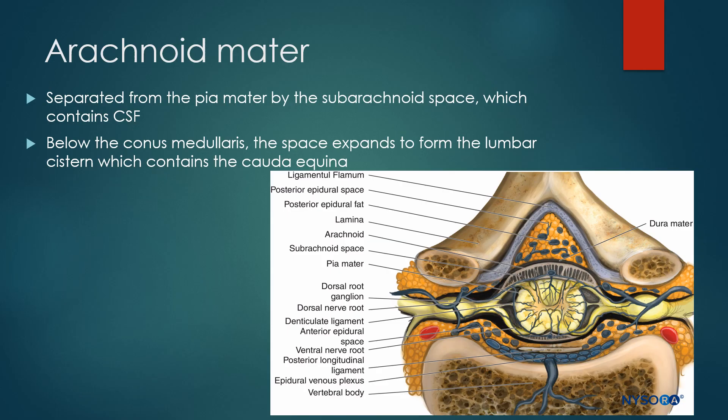The arachnoid mater is separated from the pia by the subarachnoid space, which contains cerebrospinal fluid. Below the conus medullaris — the end of the cord proper — the space expands to form the lumbar cistern, which contains the cauda equina.